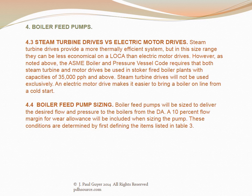Steam turbine drives provide a more thermally efficient system, but in this size range they can be less economical on an LCCA than electric motor drives. However, the ASME boiler and pressure vessel code requires that both steam turbine and motor drives be used in stoker-fired boiler plants with capacities of 35,000 pph and above. Steam turbine drives will not be used exclusively, as an electric motor drive makes it easier to bring a boiler online from a cold start. Boiler feed pumps will be sized to deliver the desired flow and pressure to the boilers from the deaerator, with a 10 percent flow margin for wear allowance included.